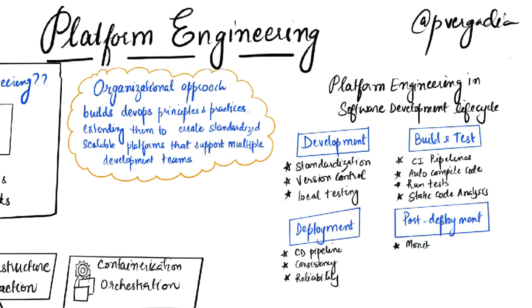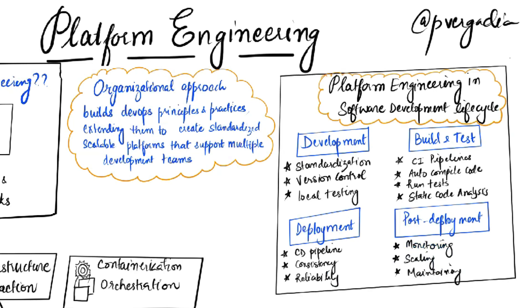Post-deployment, the platform continues to play a crucial role in monitoring, scaling, and maintaining the applications in production. By creating this comprehensive ecosystem, platform engineering really aims to accelerate software delivery, improve system reliability, and allow development teams to focus more on building features and less on operational concerns.